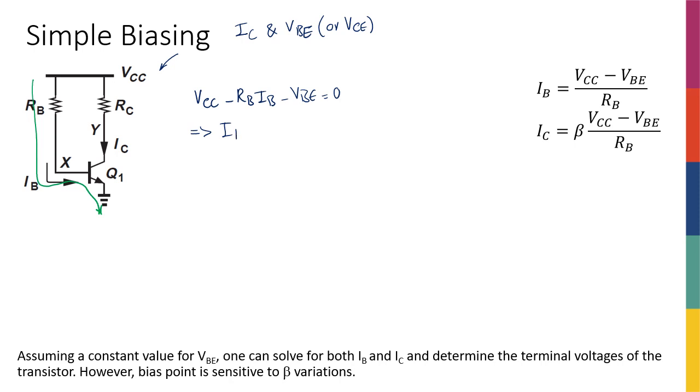Therefore, I can say that IB is going to be VCC minus VBE divided by RB. And knowing that IC is equal to beta times IB, I can say that IC is equal to beta times VCC minus VBE divided by RB.